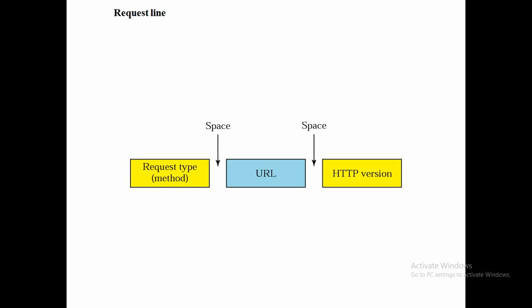The request type field is used in the request message. In different versions of HTTP, several request types are defined. The request type is categorized into a method, followed by a space, then the URL, and then the HTTP version.